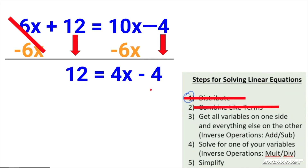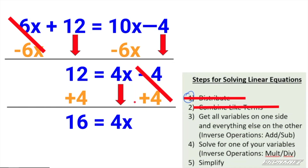I've been successful in moving all of the variables to one side. Now I need to move all of the constants over to the other side as well. I'm going to do the opposite of negative 4 — add 4 to both sides. 12 plus 4 is 16. Bring down the 4x because we haven't done anything with that, and negative 4 and positive 4 are opposites so they cancel each other out.